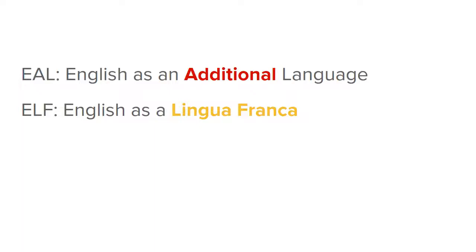The term ELF, English as a Lingua Franca, tries to better recognize how English is being used between speakers who do not speak English as a native language. A lingua franca is a language that two or more groups adopt in common to communicate with one another, even though it's not the native language of any of those groups. Increasingly, English has become a lingua franca around the world, used to communicate when people don't know each other's native language.